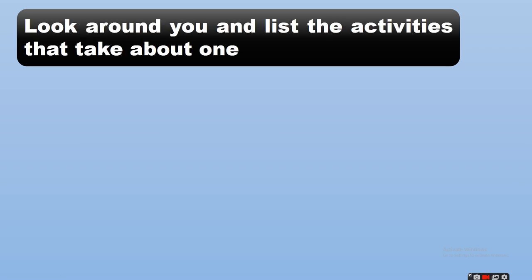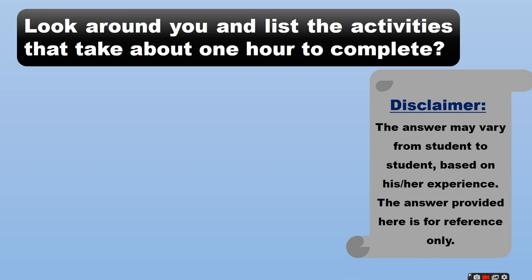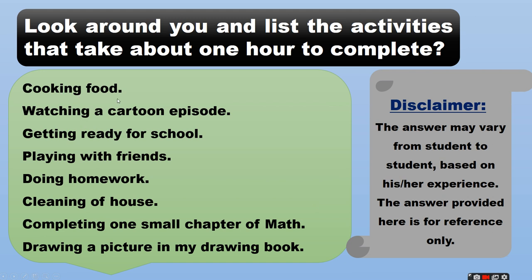Look around you and list the activities that take about one hour to complete. Disclaimer: this answer may vary from student to student — the answers provided here are for reference only. Find your own answer. Examples: cooking food, watching a cartoon episode, getting ready for school, playing with friends, doing homework, cleaning the house, completing one small math chapter, or drawing a picture in a drawing notebook.